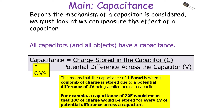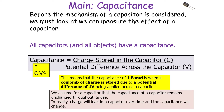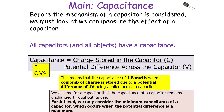A capacitance of 20 Farads means 20 Coulombs of charge will be stored for every one volt of potential difference across the capacitor, and a capacitance of 40 Farads means 40 Coulombs for every one volt. We assume for a capacitor that its capacitance remains unchanged throughout its use. In reality charge will leak over time and capacitance will change, but for A-level we only consider the minimum capacitance, which occurs when the potential difference is at a maximum.